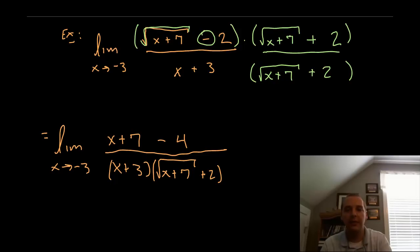The numerator simplifies to x plus 7 minus 4 makes x plus 3. Aha! We have a common factor in the numerator and denominator, so I can cancel those.